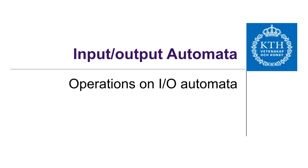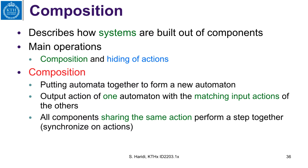We will describe the main operations on input-output automata, and in particular how to take component automata and compose them into one automaton. The first operation is composition, which describes how systems are built out of components. The two main operations are composition and hiding of actions.